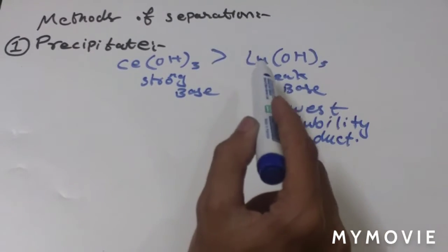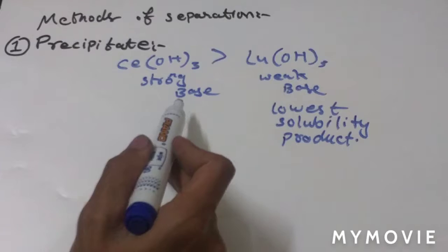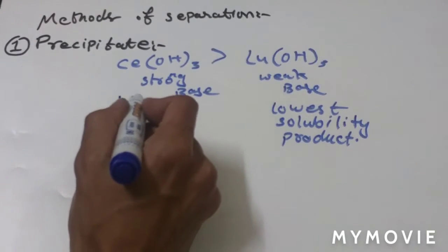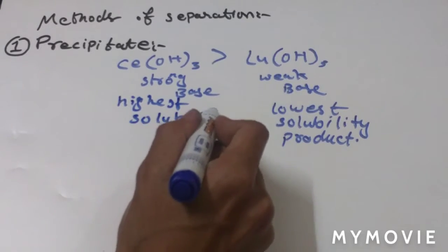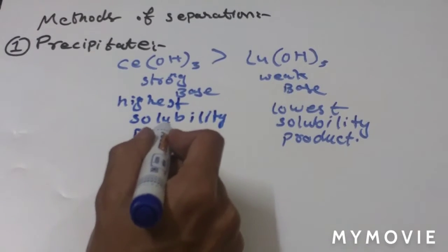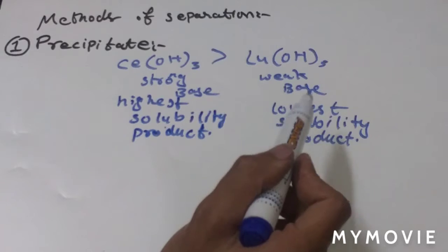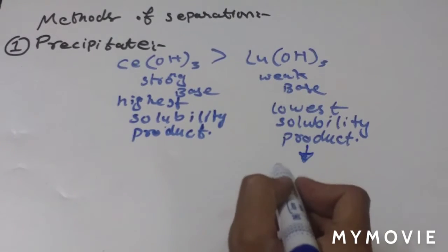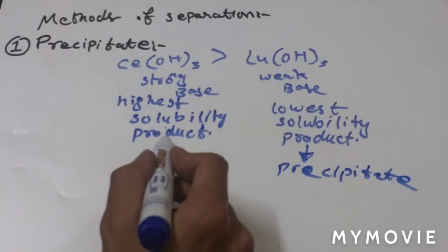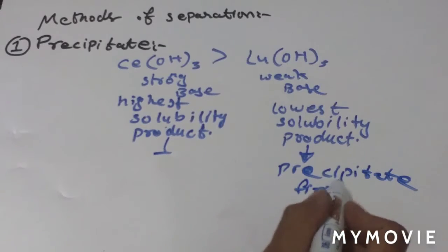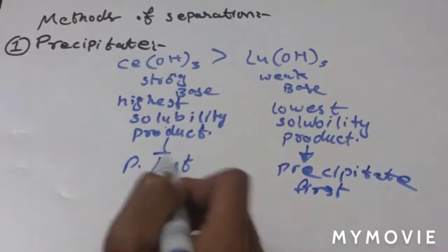Lutetium hydroxide is a weak base with very high covalent character according to Fajan's rule, giving it the lowest solubility product. Cerium hydroxide is a strong base with the highest solubility product, so it precipitates last.